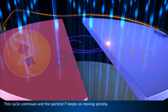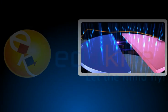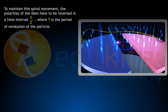This cycle continues, and the particle P keeps on moving spirally. To maintain this spiral movement, the polarities of the Ds have to be reversed in a time interval T by 2, where T is the period of revolution of the particle.